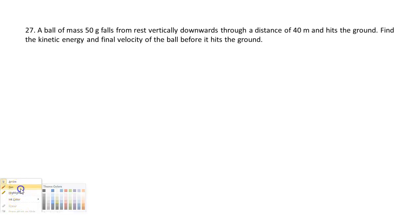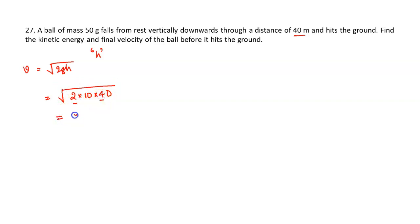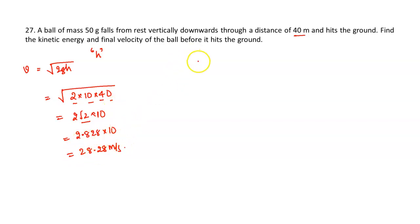The next question is related to kinematics. A ball of mass 50 grams falls from rest vertically through a distance of 40 metres. Find the kinetic energy and final velocity. The final velocity is v = √(2gh) = √(2 × 10 × 40) = √800 = 2√2 × 10 = 28.28 m/s. The tension does no work, so by the work-energy theorem, work done by gravity equals final kinetic energy.